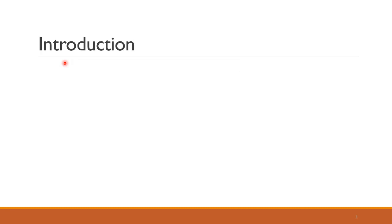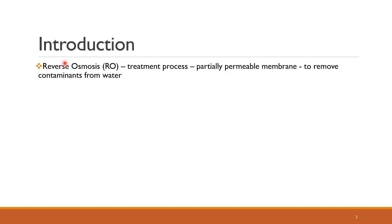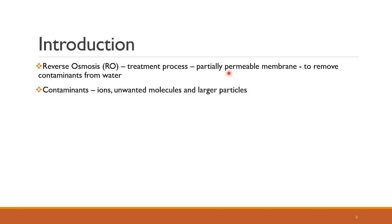So let us begin with the introduction. Reverse osmosis is a treatment process used to treat contaminated or concentrated water by the use of a membrane that is partially permeable — meaning it can allow only some materials to pass through it, whereas it restricts the transfer of other components. This partially permeable membrane is used to remove contaminants from water, ranging from ions, unwanted molecules, to larger particles.